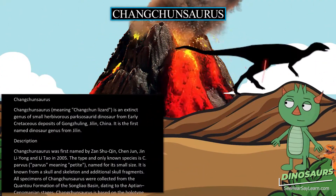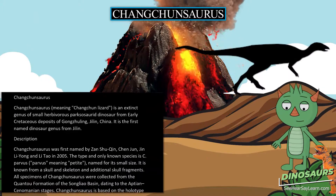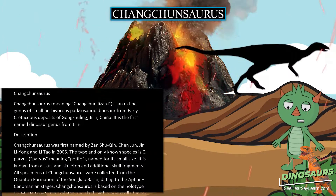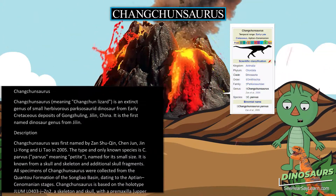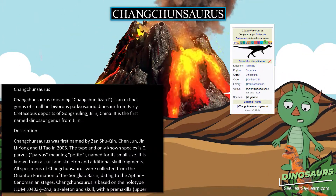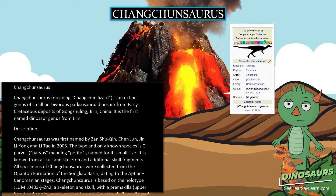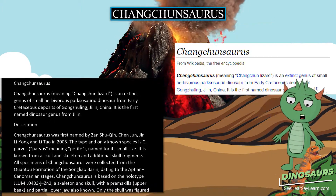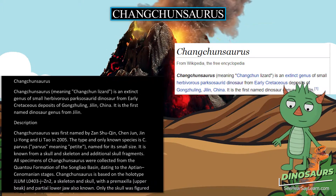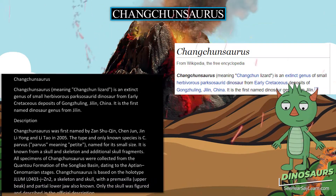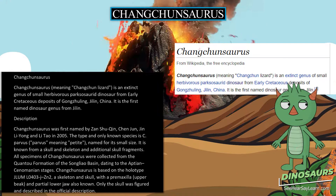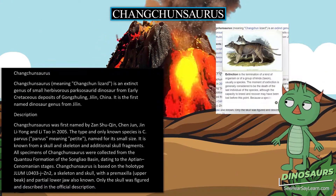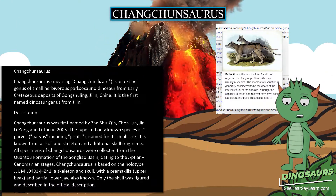Changchunsaurus, meaning Changchun lizard, is an extinct genus of small herbivorous parxosaurid dinosaur from early Cretaceous deposits of Gongjuling, Jilin, China. It is the first-named dinosaur genus from Jilin.